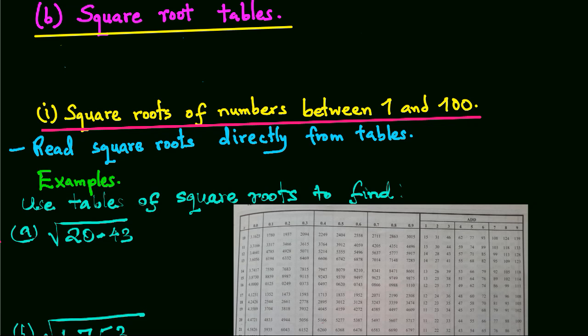Let's talk about square root tables and how to use them to determine square roots of numbers. Tables of square roots give approximate values of square roots of numbers from 1 to 100.